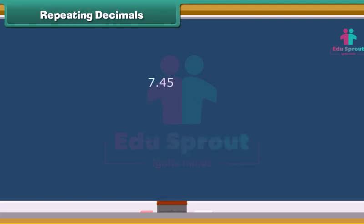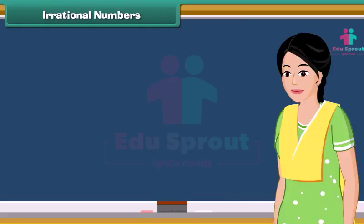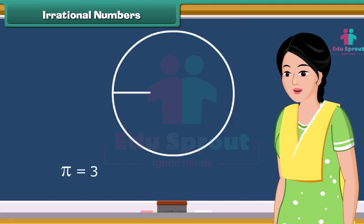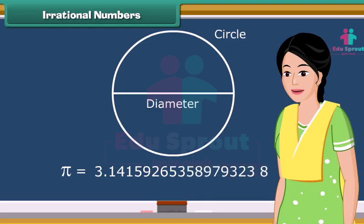The decimals that stop are called terminating decimals. Some decimals called irrational numbers don't end or repeat. A good example is pi, which is the ratio of the circumference of a circle to its diameter. It begins with 3.14159 and keeps going on with no particular pattern into infinity.